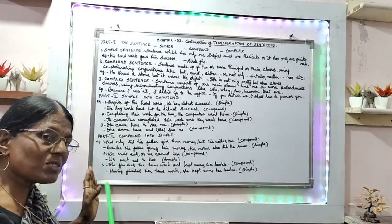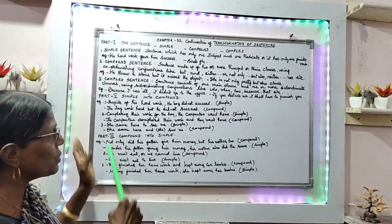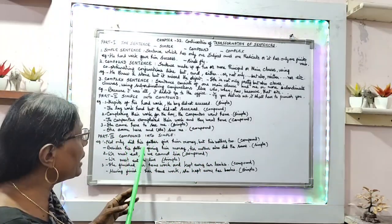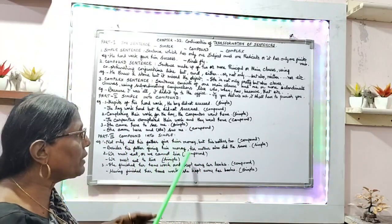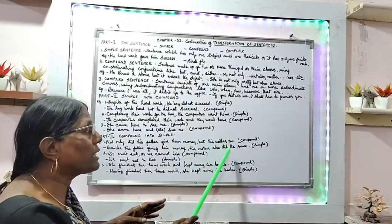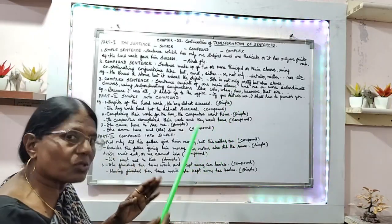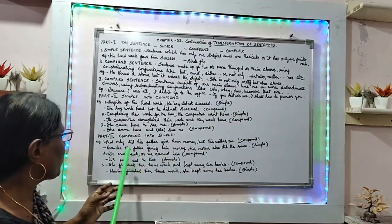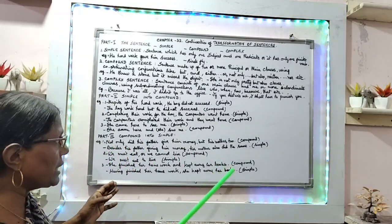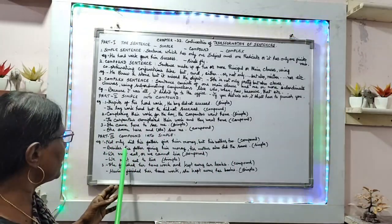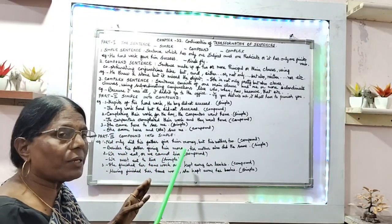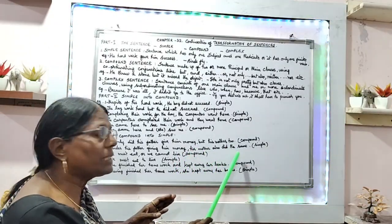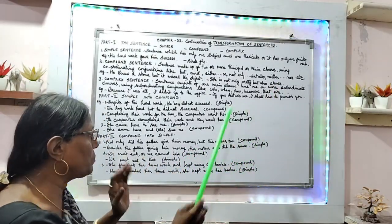Part 3 — compound sentence to simple sentence. Example: 'Not only did his father give him money, but his mother also gave.' That is a compound sentence. When you change it into simple: 'Besides his father giving him money, his mother also did the same.' That is a simple sentence.